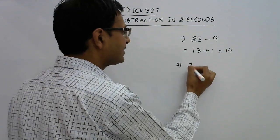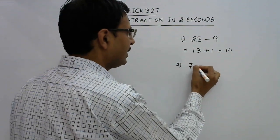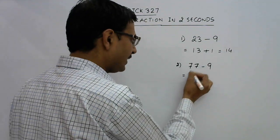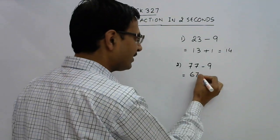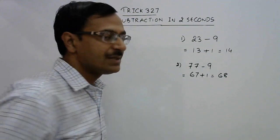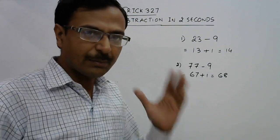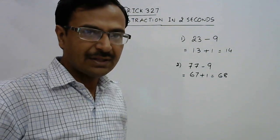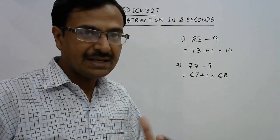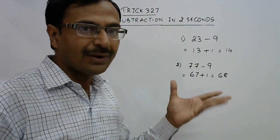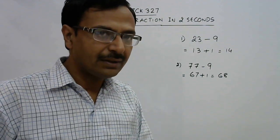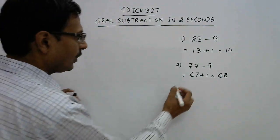One more example of this kind: 77 minus 9. Reduce this by 10, you get 67, and add 1, you get 68. This is how we think of numbers in our mind, and when we think like this, subtraction becomes very easy. Actually, this is a problem of addition of 1, not subtraction of 9.